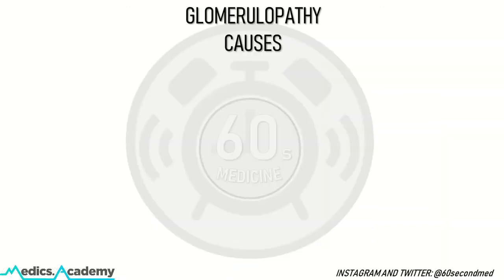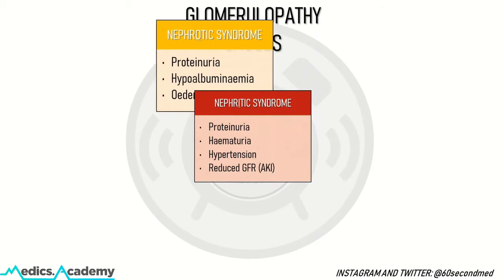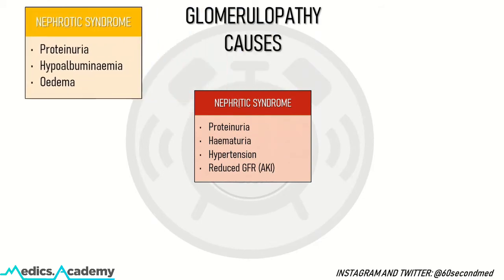Glomerulopathy or glomerular dysfunction can present clinically with nephrotic syndrome, which includes proteinuria, hypoalbuminemia and edema, or it could present as nephritic syndrome with proteinuria, haematuria, hypertension and a risk of an acute kidney injury.